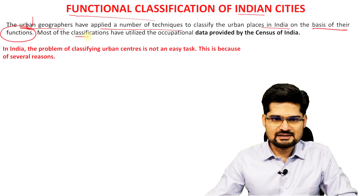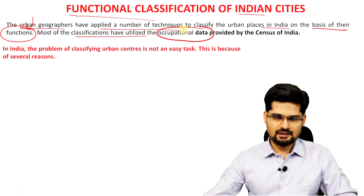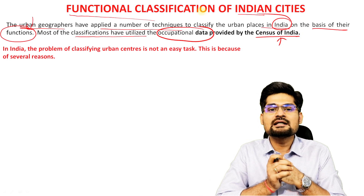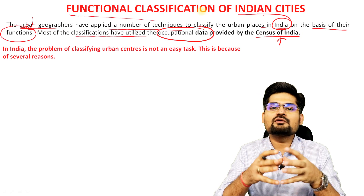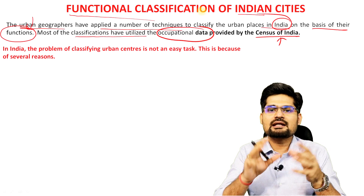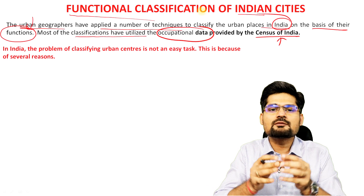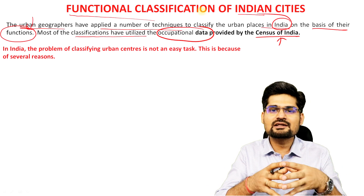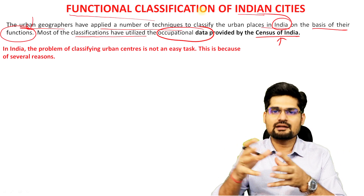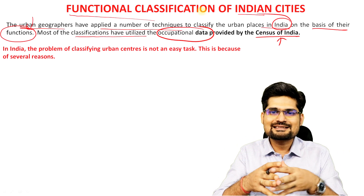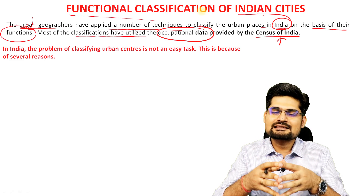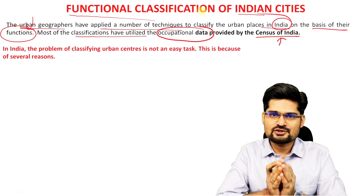Most classifications have utilized occupational data provided by the Census of India. Occupational data gives us data on main workers, marginal workers, and several others. We look into the occupational structure and classify accordingly: if workers are more engaged in primary activities, it's a rural area; if in secondary, tertiary, and quaternary activities, it's an urban area. So occupation becomes a major basis for functional classification of towns and cities.